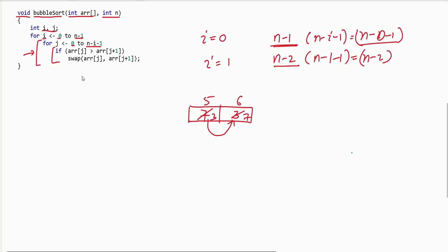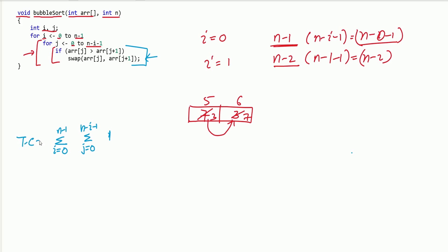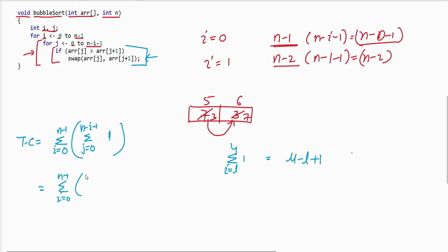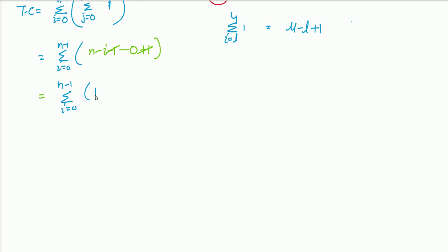What is the time complexity of this algorithm? Using the summation method: summation i equals 0 to n minus 1, summation j equals 0 to n minus i minus 1, of 1 — because the inner operations (comparing ARR[j] with ARR[j+1] and swapping) are constant time. Applying the formula — upper limit minus lower limit plus 1 — the inner summation becomes n minus i minus 1 minus 0 plus 1, which simplifies to n minus i. So the outer summation becomes: summation i equals 0 to n minus 1 of (n minus i).